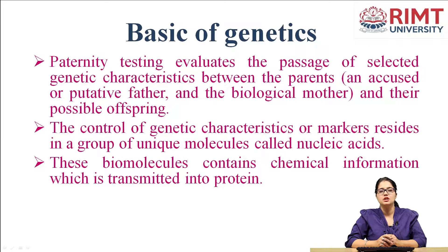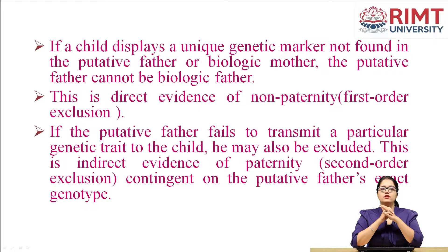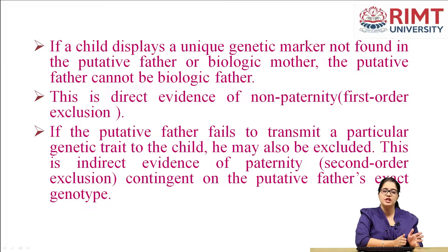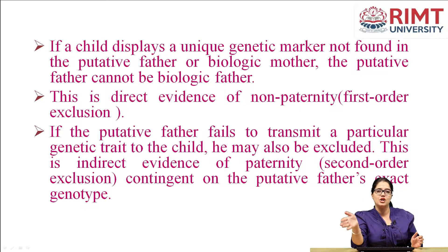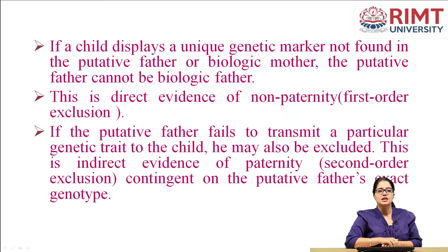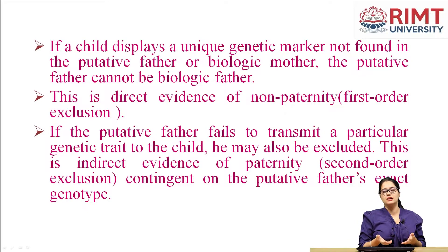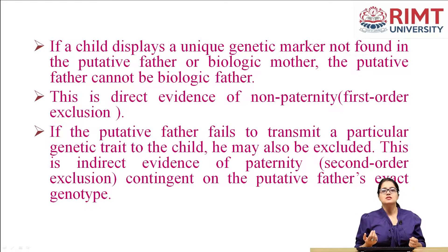These biomolecules contain chemical information that are transmitted into proteins, and the whole process is known as the central dogma. If a child has a unique genetic marker that does not match the alleged father, then the child is not the biological child of that male. But if the male's genetic marker matches exactly with the child's, then the child is a biological child of that male. If a child displays a genetic marker not found in the putative father or biological mother, the putative father cannot be a biological father.